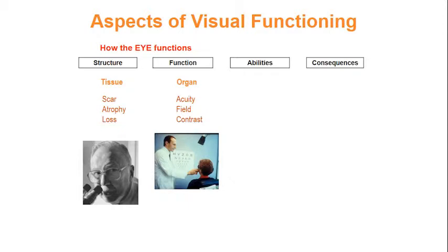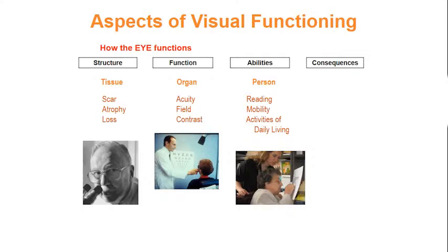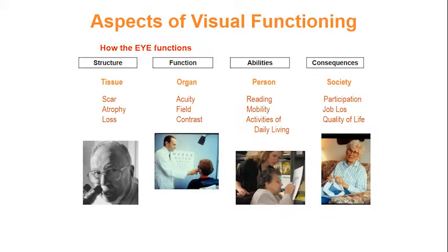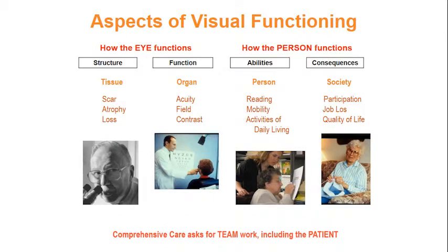Yet knowing how the eye functions does not tell us how the person functions. So we need to widen our perspective again to consider tasks such as reading, mobility, and activities of daily living — here we need various low vision professionals to work with the patient. Beyond that, we need to look at the person in a societal context. Do these changes impact on the person's participation in society, causing a reduced quality of life? How can we be sure of a contented patient, since that is the end goal of all our interventions and particularly of vision rehabilitation? Comprehensive care cannot be the job of one person — it needs a team of professionals, and the patient must be part of that team.